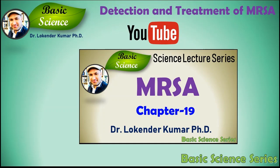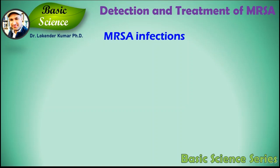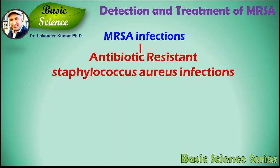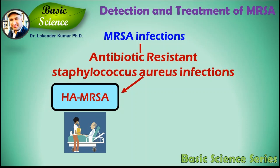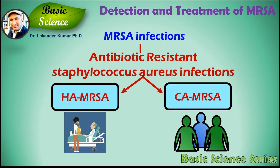To know basic concepts about MRSA, please refer to episode 19. MRSA is a type of Staphylococcus aureus bacterial infection that has become resistant to many of the antibiotics used against this bacteria. MRSA infections are categorized into two basic types: hospital-acquired MRSA infections, or healthcare-associated MRSA infections, and community-acquired MRSA infections, commonly known as CA-MRSA infections.